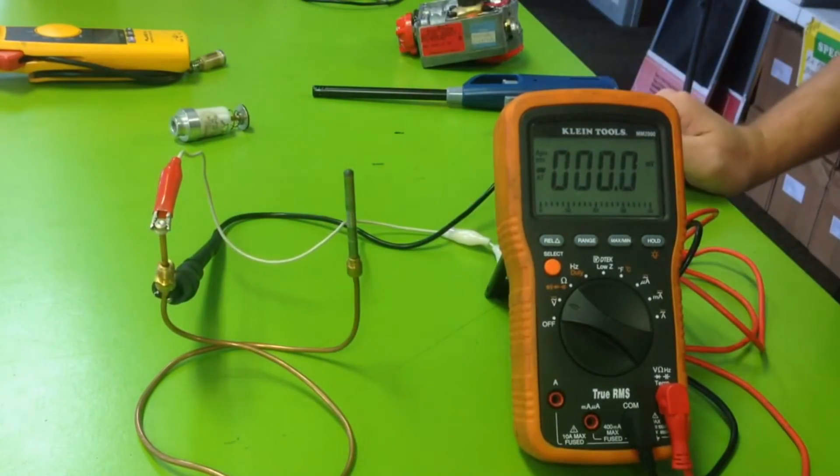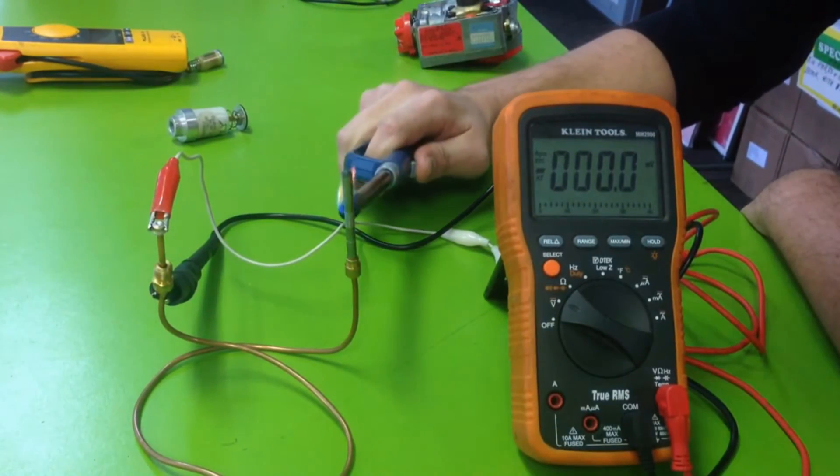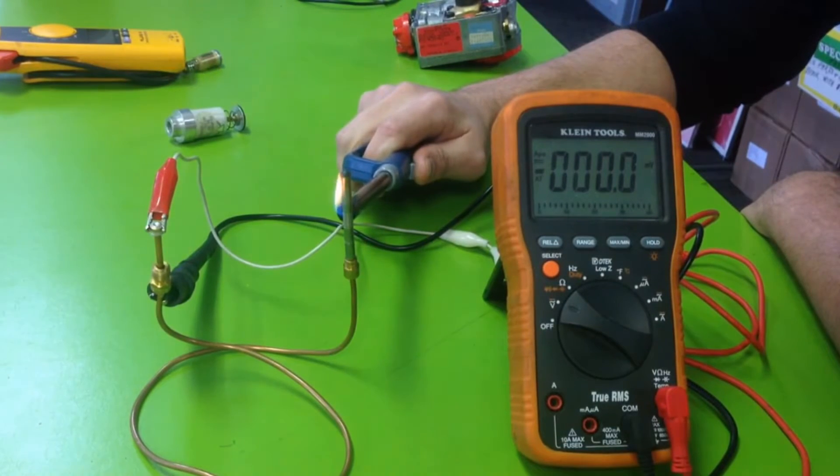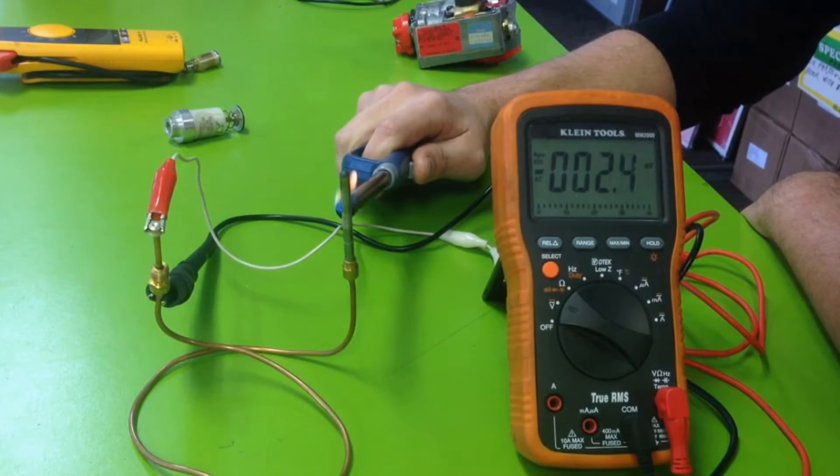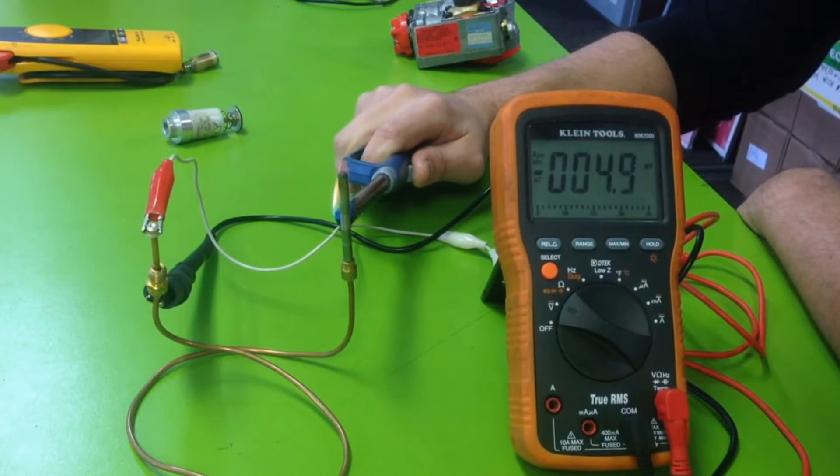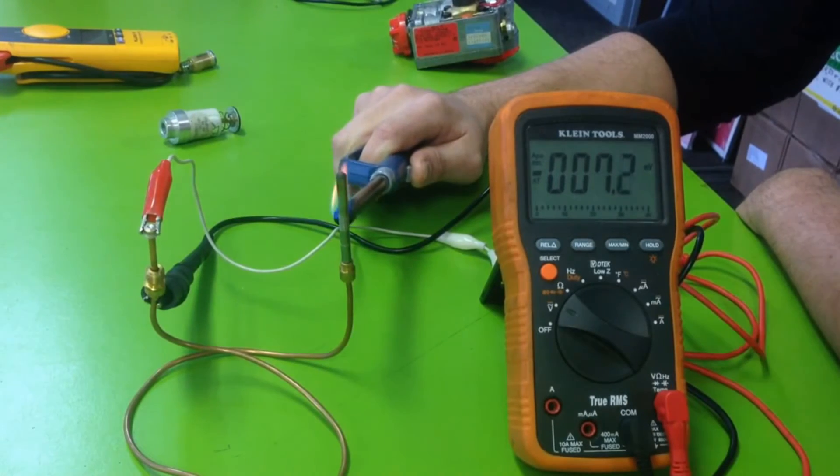Then all you do is take heat and apply it to the thermocoupler, and you should see numbers being generated. I'm generating 4, 5, 6 millivolts - basically I'm making millivolts.